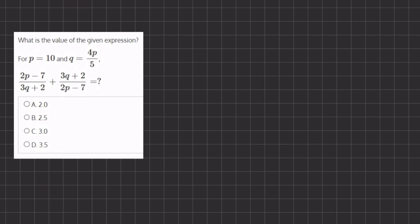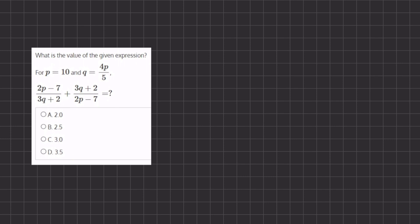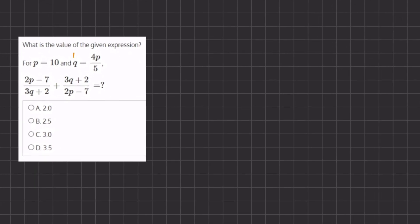So we have two variables, p and q, and we are given here an expression for q. And in this expression we have this value p, which we are given, which is 10. So if we plug in the value for p, we'll be able to find the value of q.